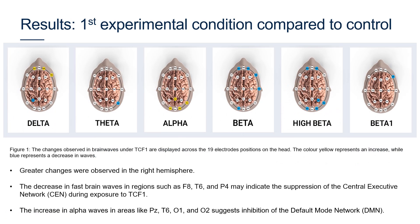The results of the first experimental condition compared to the control demonstrated that the following regions were significantly influenced under T-consciousness field 1: prefrontal cortex, right temporal cortex, right and left occipital cortex, and right frontal cortex. Greater changes were observed in the right hemisphere compared to the left. Although the midline frontal cortex FZ presented no change, an increase in alpha waves at the midline parietal cortex PZ was observed. The decrease in fast brainwaves in regions such as F8, T6 and P4 may indicate the suppression of the central executive network. Moreover, the increase in alpha waves in regions such as PZ, T6, O1 and O2 suggests inhibition of the default mode network.